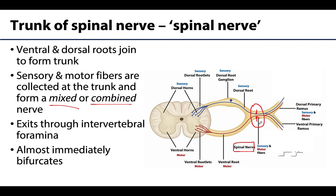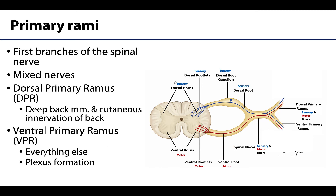The trunk will exit the intervertebral foramen and almost immediately branch into its first branches called the primary rami — primary rami just means first branches. There will be a dorsal as well as a ventral primary ramus, and unlike how the ventral and dorsal rootlets and roots were all motor or sensory respectively, the ventral and dorsal primary rami are going to have both sensory and motor fibers, making them mixed nerves.